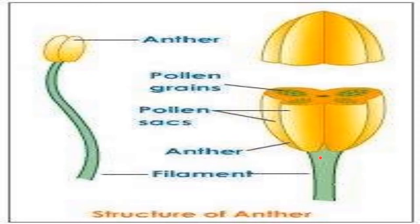This was done by the culture of excised anthers. Borgan and Nisch in 1967 obtained a complete haploid plantlet from anther culture of Nicotiana tobacum.